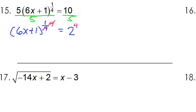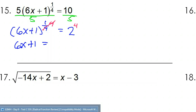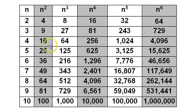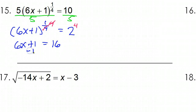These 4s will cancel each other out — that's why we picked it. So that will give us 6x plus 1 to the 4th power equals 16. You might not know that off the top of your head, so use your chart. 2 to the 4th power is 16, because you won't have your TI-30x multi-view. Next, we subtract 1 from both sides.